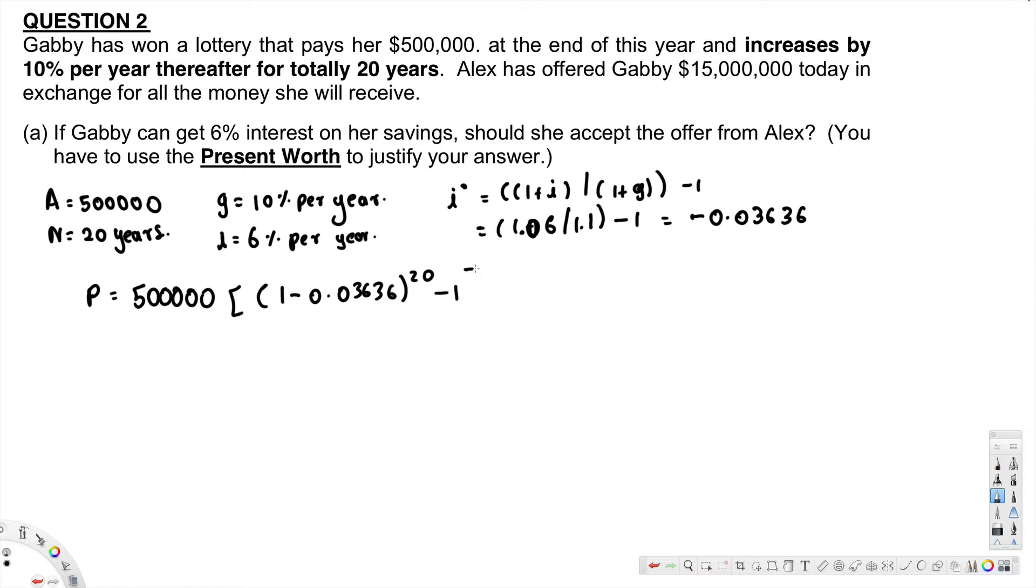Divided by -0.03636 times (1 - 0.03636)^20, and that one multiplied by 1 over (1 + 0.1).